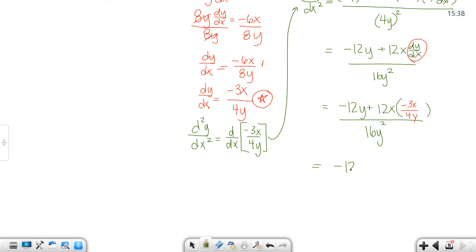Okay so we're going to get negative 12y. When we clean up this second part it's going to make a complex fraction and you're going to get negative 36x squared over 4y, and that's over 16y squared.